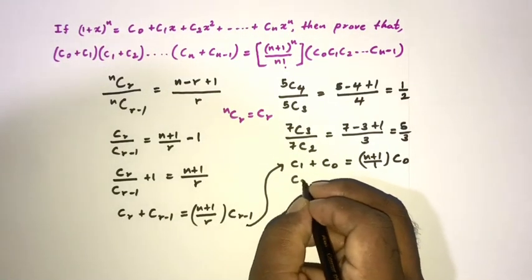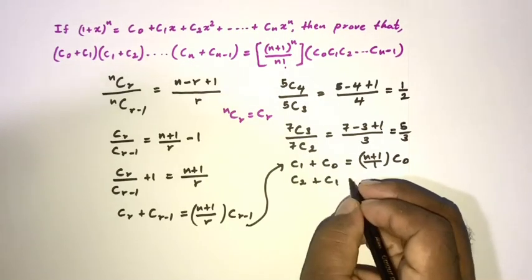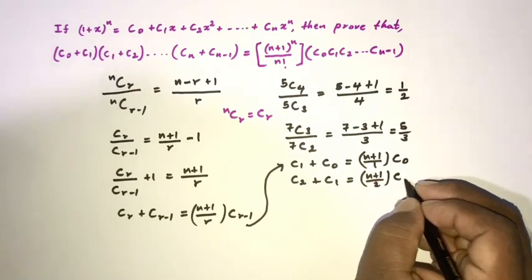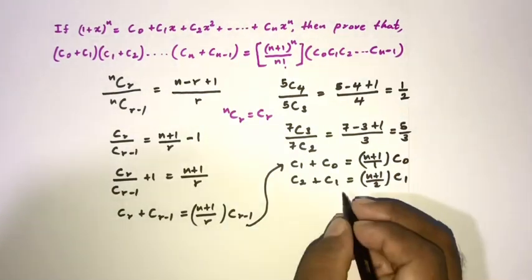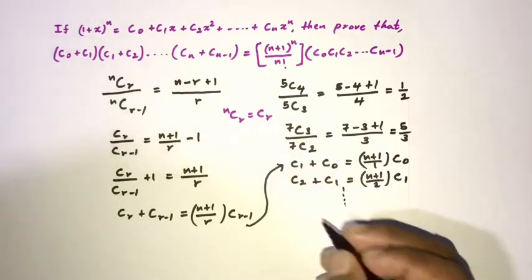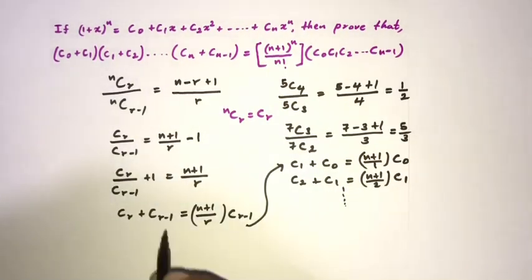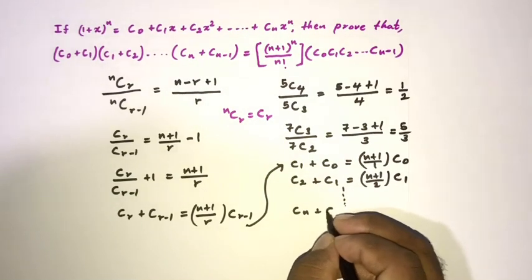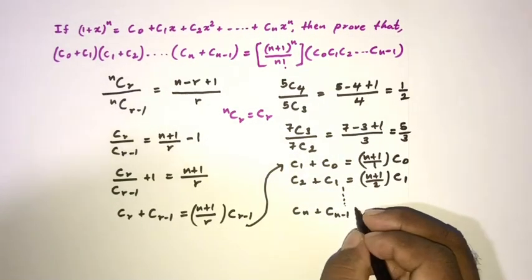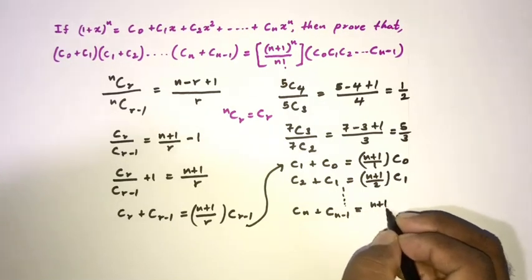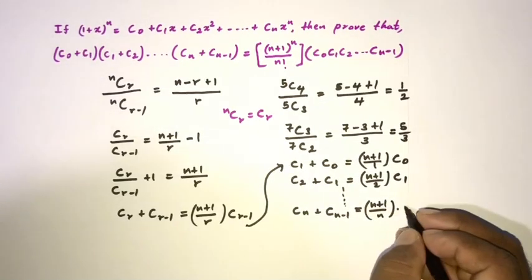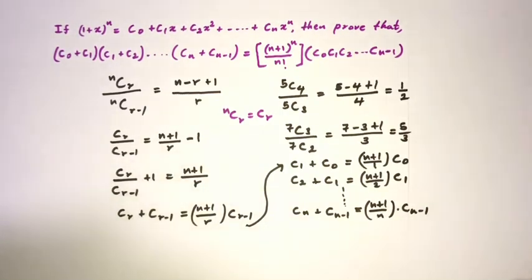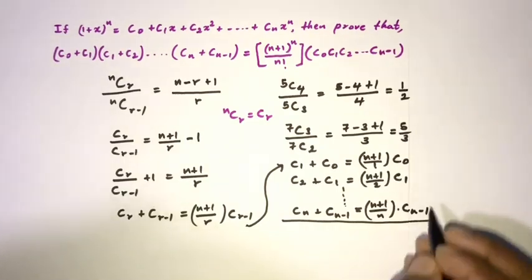Substituting r = 2: C2 + C1 = (n + 1)/2 times C1. And finally substituting r = n: Cn + C(n-1) = (n + 1)/n times C(n-1).